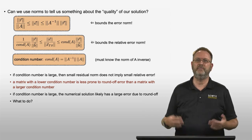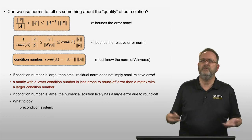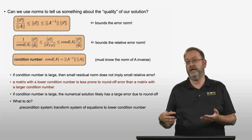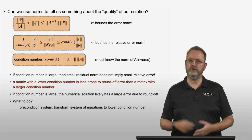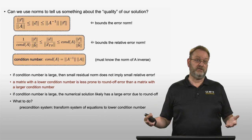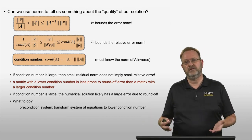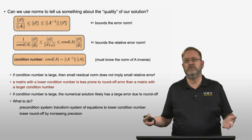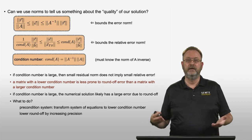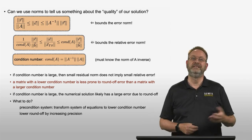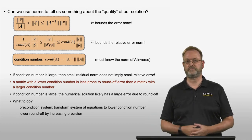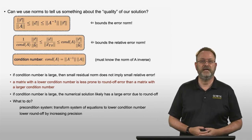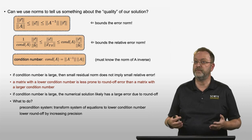So what do we do if we have a problem with a matrix with a large condition number? We have to do something called preconditioning — transforming our system of equations into a linear system that has a lower condition number. That's the topic of more detailed linear algebra classes and not the topic of this class. The other option is to lower round-off errors by increasing the precision. So the two options are preconditioning or increasing precision when the condition number is very large, indicating that the solution will be susceptible to round-off errors.